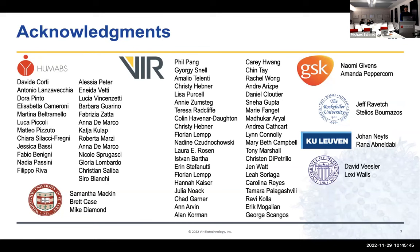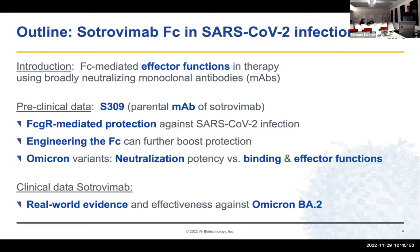A quick outline of the talk: I'll mostly focus on Sotrovimab, or its parental antibody S309, and give a brief recap of effector functions and their potential importance for broadly neutralizing antibodies. Then I'll share recent preclinical data in different animal models trying to dissect how important FC gamma receptor-mediated and FC-mediated effector functions are during SARS-CoV-2 infection, whether we can potentially further increase them, and how this applies to currently circulating Omicron variants where neutralization may be altered. At the end, I'll give a brief glimpse on current real-world evidence, especially about the Omicron BA-2 variant.